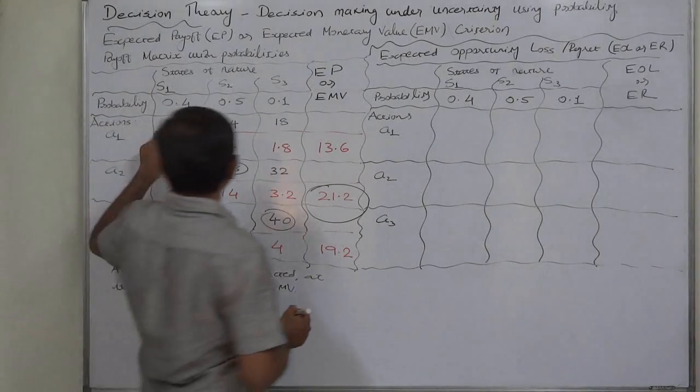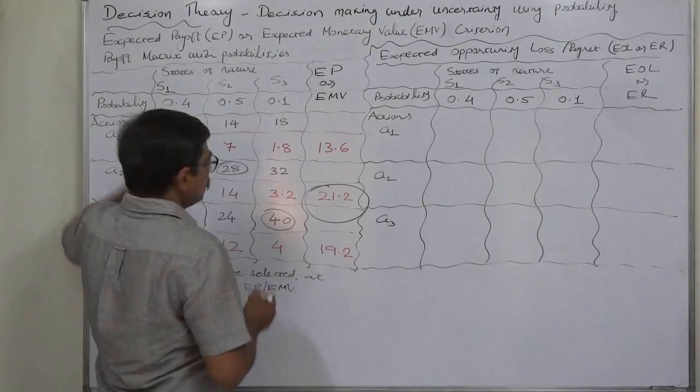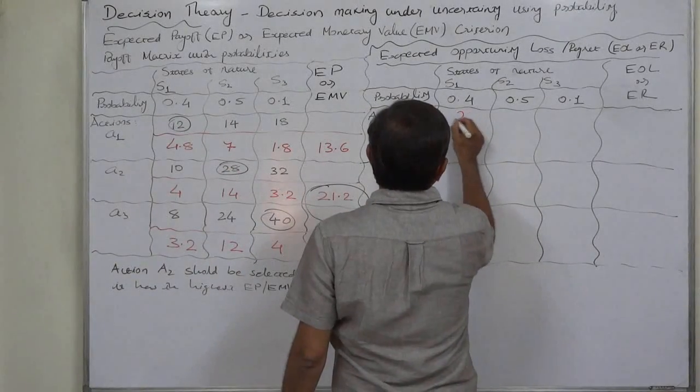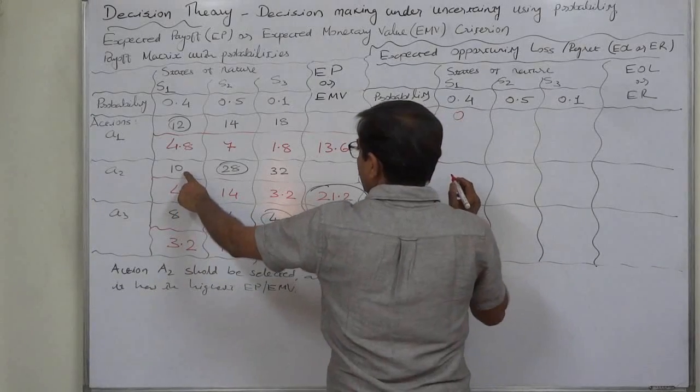In case of s1, the highest payoff is 12, so 12 minus 12, that will be 0; 12 minus 10 will be 2; 12 minus 8 will be 4.